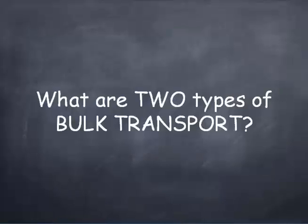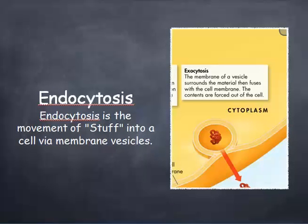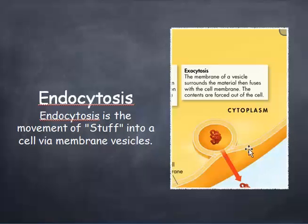Bulk transport causes two types of transport. The first one will be endocytosis. Endocytosis is the movement of stuff into a cell membrane via membrane vesicles. Basically the big bulky items, such as the protein or sugar, come around and the membrane basically makes a little wrap around it — it kind of packs it in a baggie and then it goes into the cell. So stuff comes in, gets packaged, gets sent into the cell. That's called endocytosis.